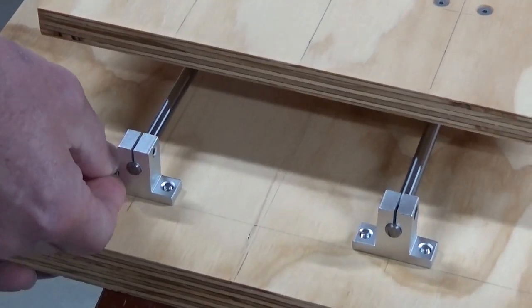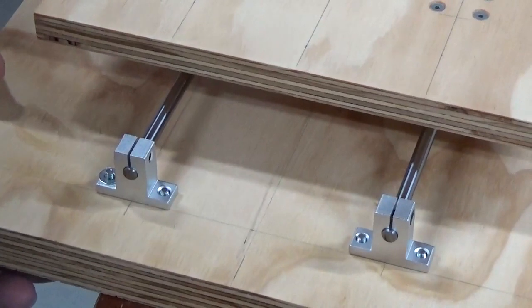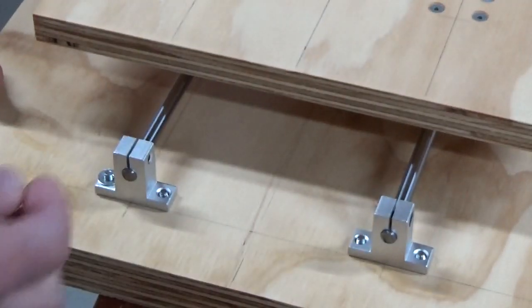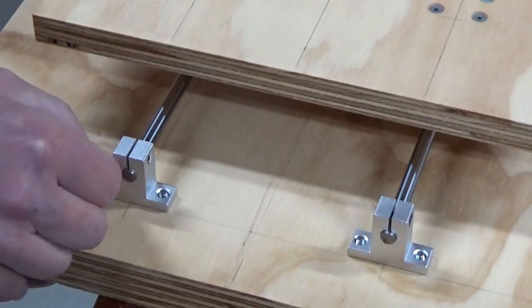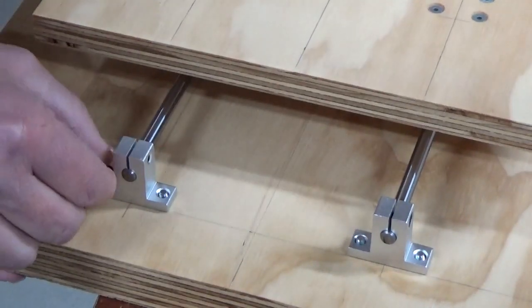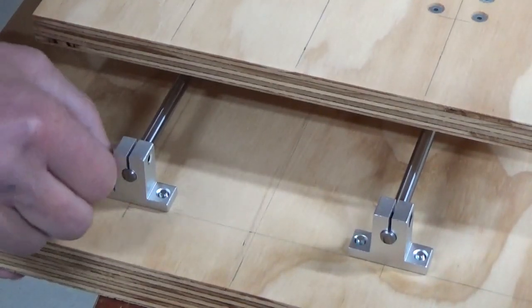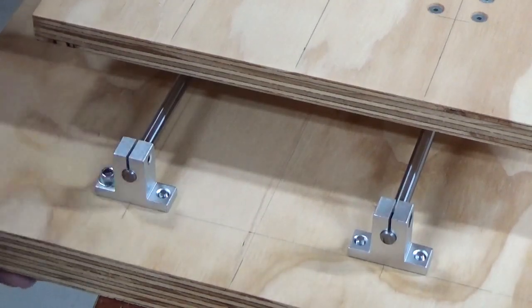All we're doing here is just putting on a washer and on top of the washer we're using a Nyloc nut and we'll be putting those through for all of them. Now we're not tightening anything up at the moment and I'll show you why in a second.